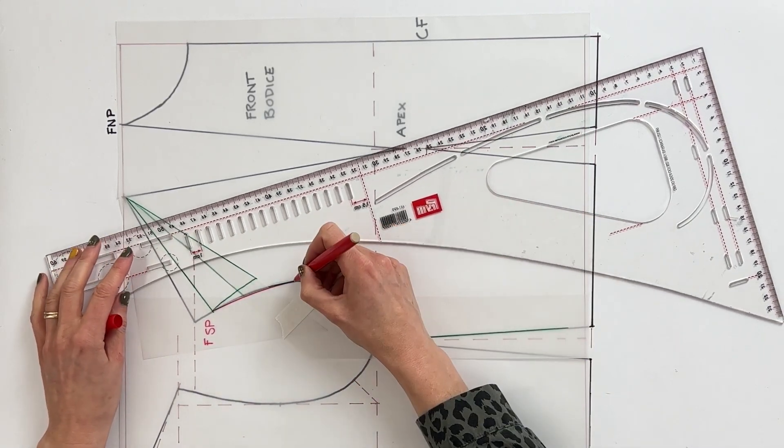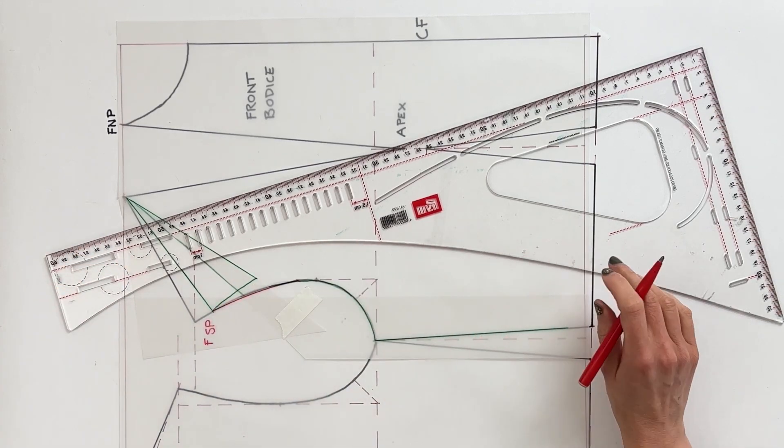And I just want to find a nice curve lining that front shoulder point up with my armscye. So something like that is going to look quite nice. It's following the curve but obviously we want our armscye depth to remain the same or the circumference all around it.